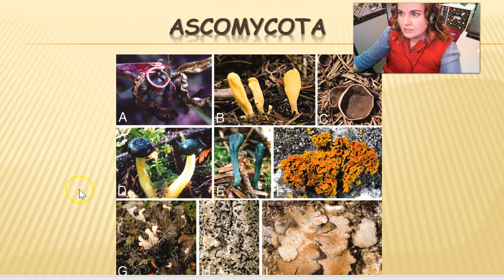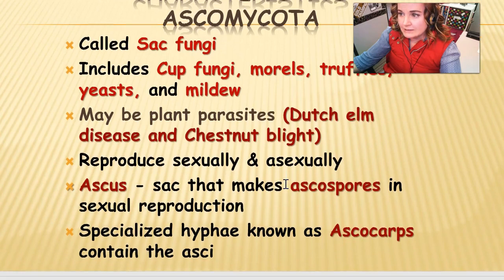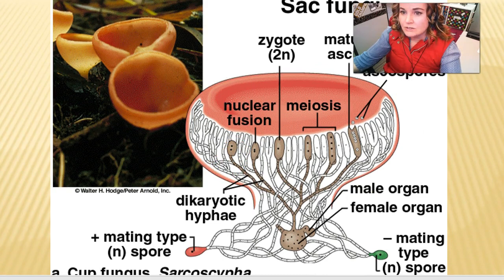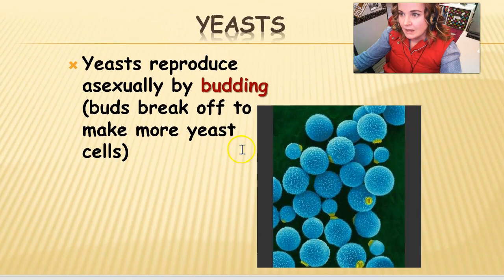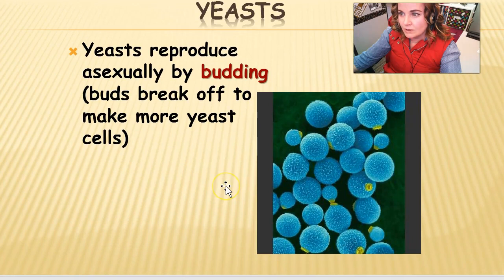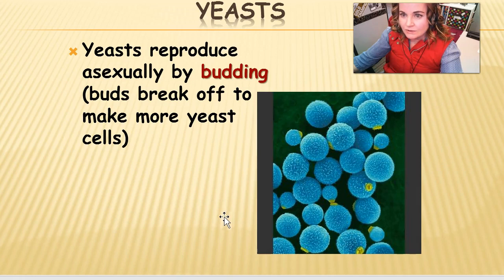The last group we'll discuss is Ascomycota — the sac fungi. Their reproductive structure is called an ascus: a cup-like structure that houses all the spores, which is why they're sometimes called the sac or cup fungi. Yeasts are also included in Ascomycota, even though they're a bit unusual: they're unicellular, produce asexually by budding, and don't have sexual reproduction, but they still fit within this group.